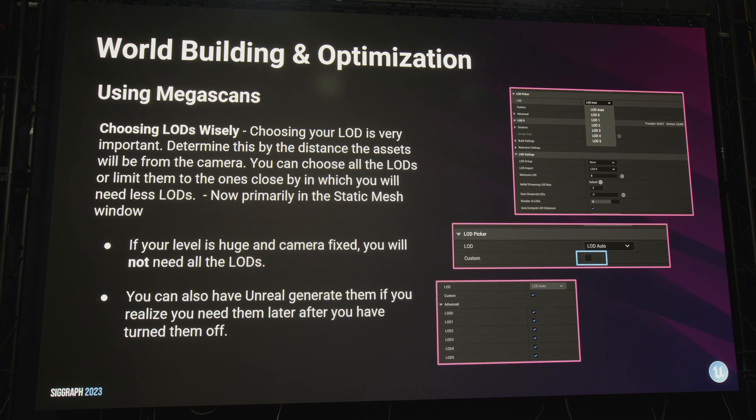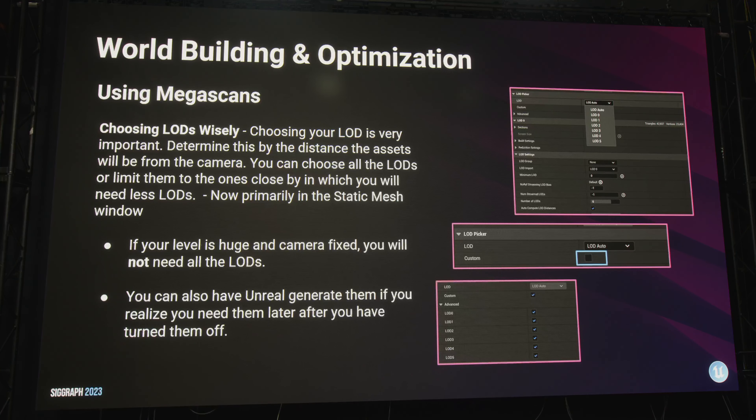We talked about using Megascans. We can also use LODs. Level of detail is very important. It's an either-or situation — working with LOD or working with Nanite. I call them the Holy Trinity when working with Unreal: virtual shadow maps, Lumen, and Nanite. They all work really well together.